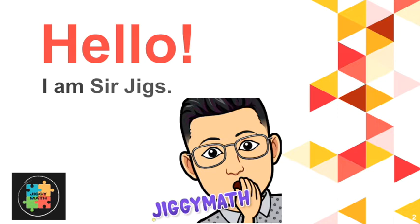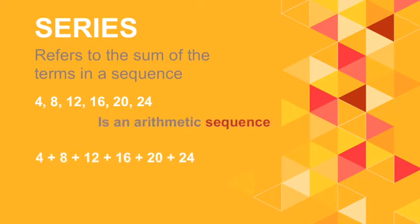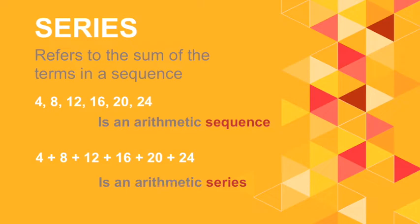What is the difference between sequence and series? A series refers to the sum of the terms in a sequence. For example, 4, 8, 12, 16, 20, 24 is an example of an arithmetic sequence. While 4 plus 8 plus 12 plus 16 plus 20 plus 24 — getting the sum of the terms in a sequence — this is now an example of an arithmetic series.